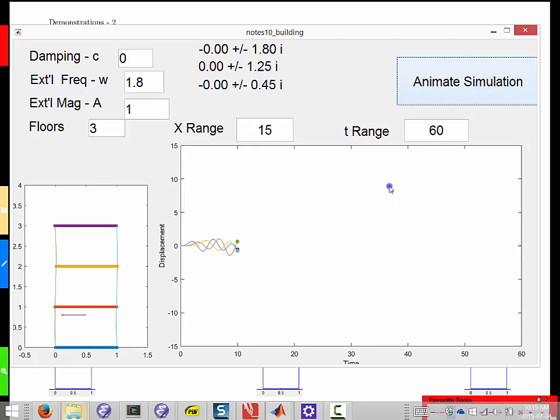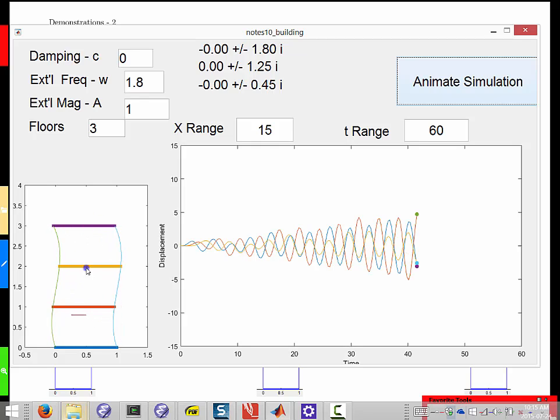I call this the dancing building. All three floors oscillate in opposite directions from their neighbors. And so we get this quite intricate balance between the various beams and their natural oscillations.